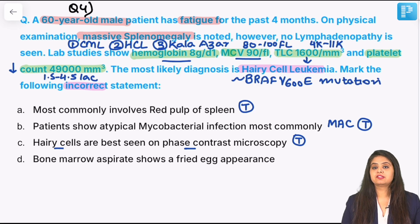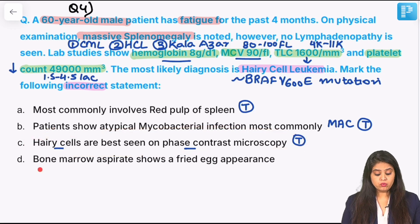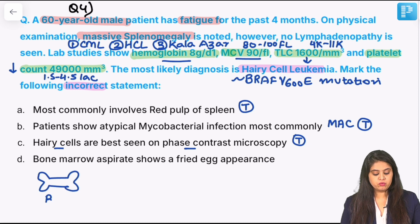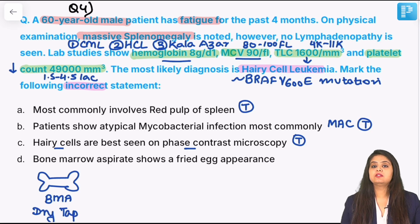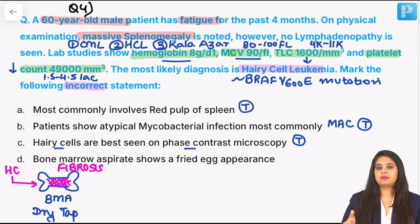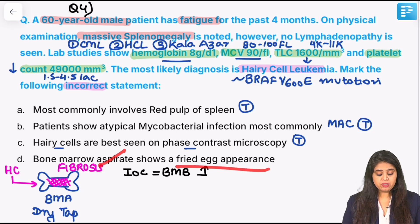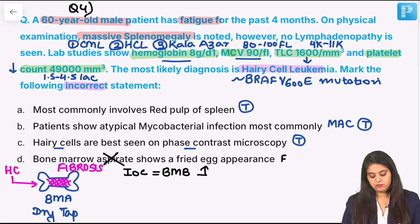Nearly 100% of cases show this mutation. On peripheral blood, hairy cells can be seen on a simple blood sample. On bone marrow studies, there are two options: bone marrow aspirate or biopsy. On a hairy cell leukemia aspirate, no material comes out — it's a dry tap. The reason: hairy cells release mediators that cause fibrosis of the bone marrow, so a needle in fibrous tissue yields no liquid. Therefore, the investigation of choice is bone marrow biopsy, which shows fried egg appearance. Fried egg appearance is seen on biopsy, NOT on aspirate — that's what is false and that's the answer.